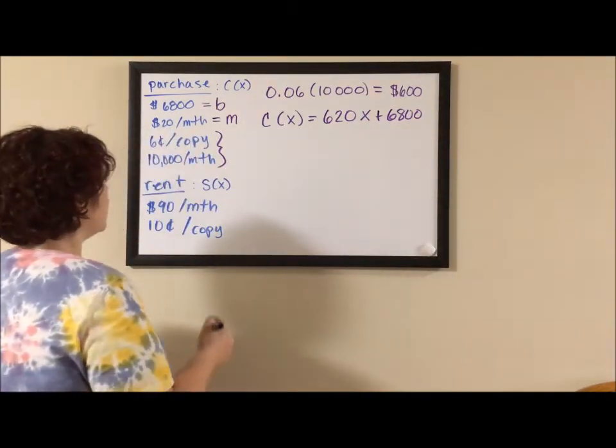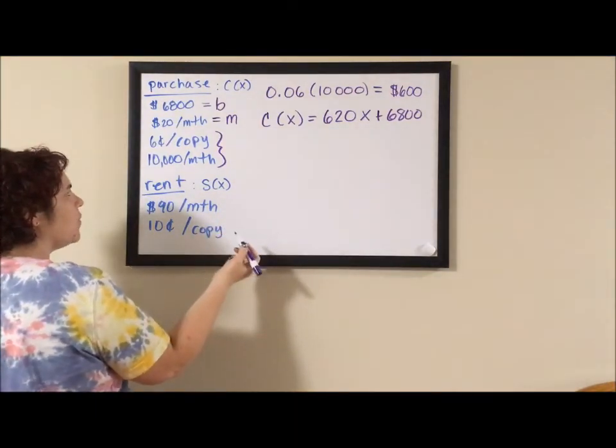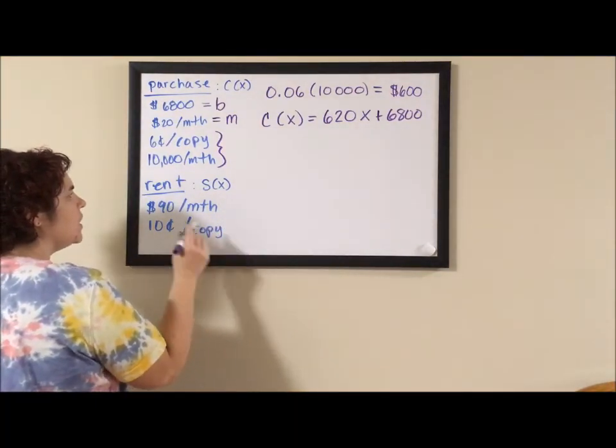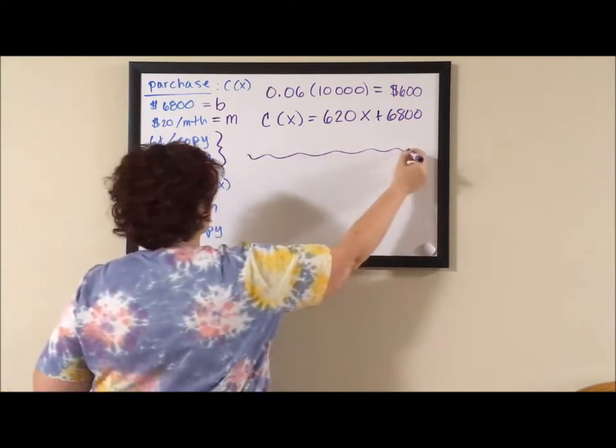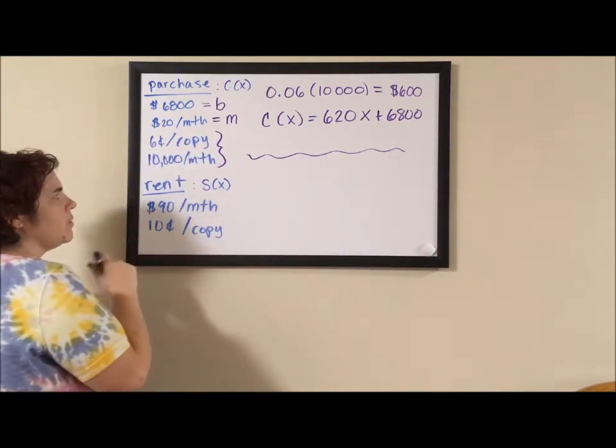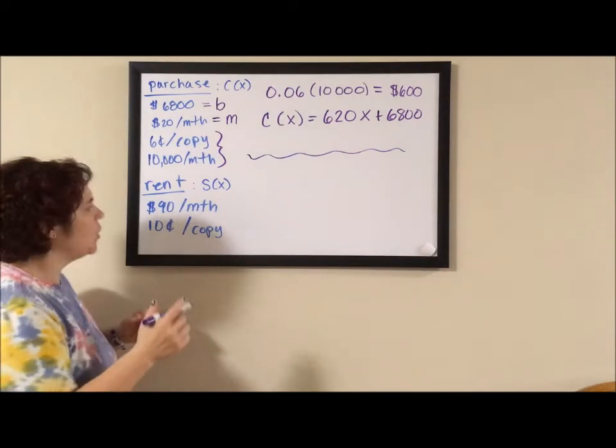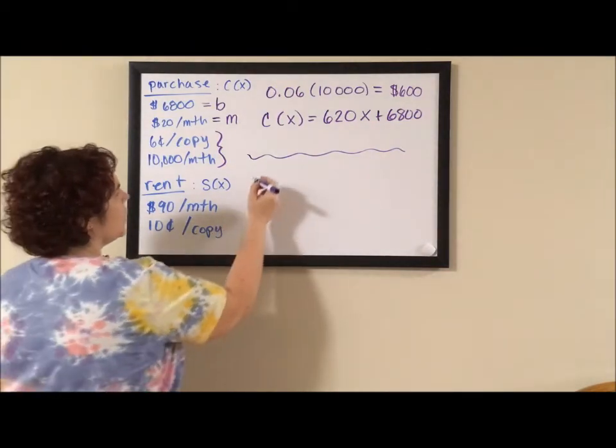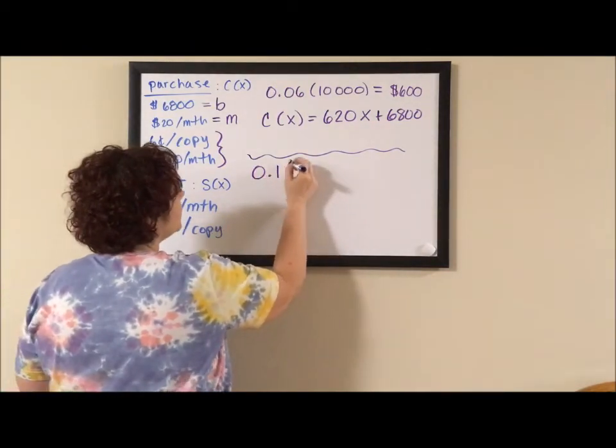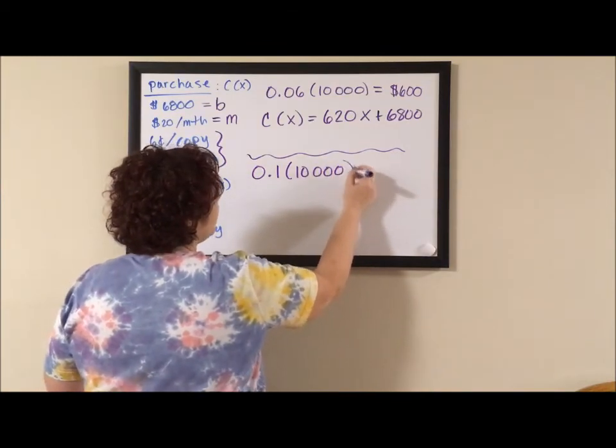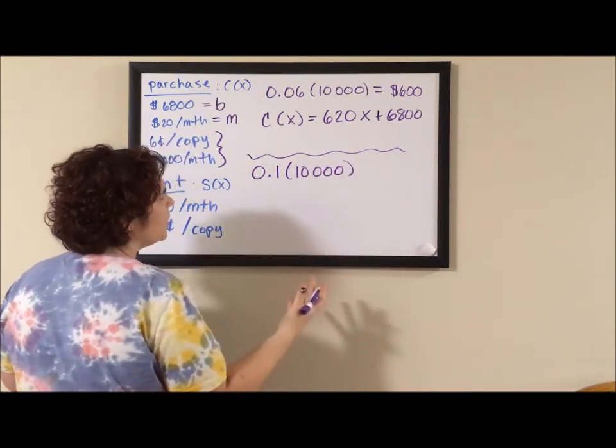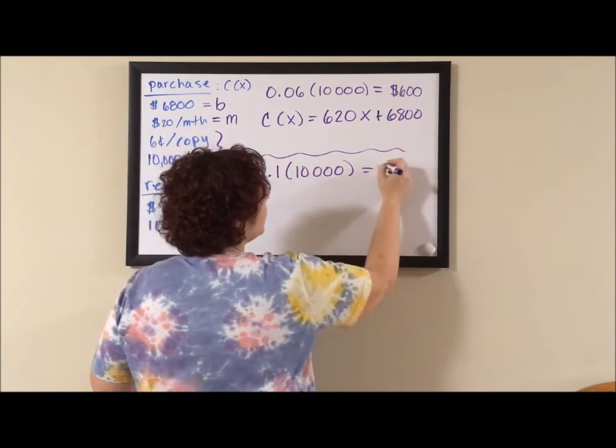Renting, we have two items that are both slope. So to rent the copier, it's $90 a month. That's an obvious piece of slope, but then it's 10 cents per copy. So 0.1 times, it's still 10,000 copies. We haven't changed the way we do copies. This is going to be $1,000.